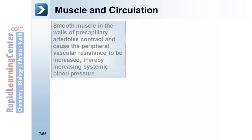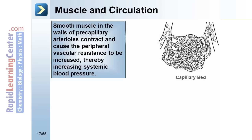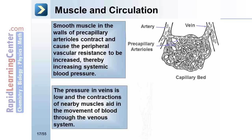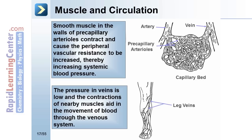Smooth muscle in the walls of the precapillary arterioles contracts and causes peripheral vascular resistance to increase, thereby increasing systemic blood pressure. The pressure in veins is low, and the contractions of nearby muscles aid in the movement of blood through the venous system.